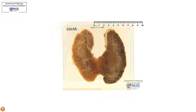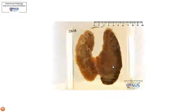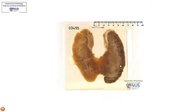So what we have here is diffuse enlargement of the thyroid gland. Note that the color of the gland is a little bit darker than usual, at least in this region. So this is suggestive of a highly vascular state.